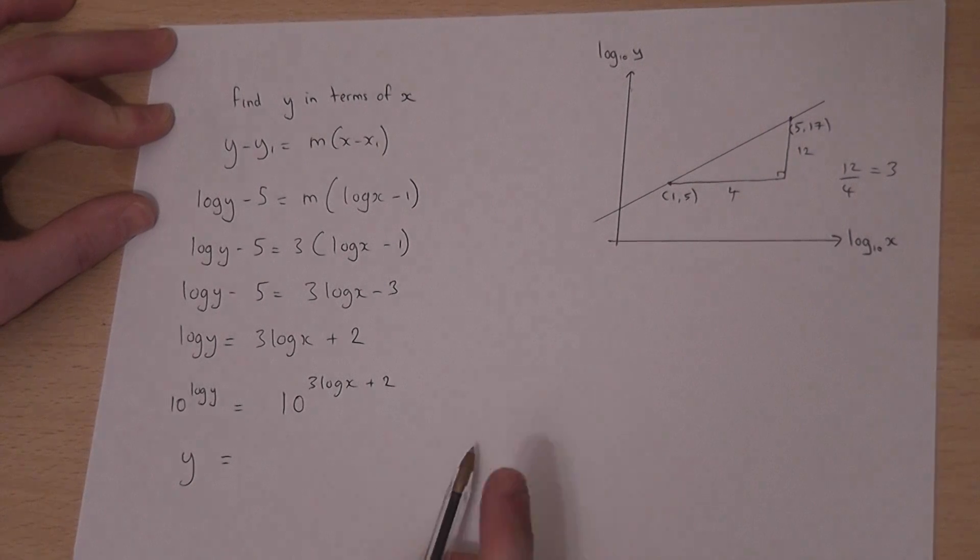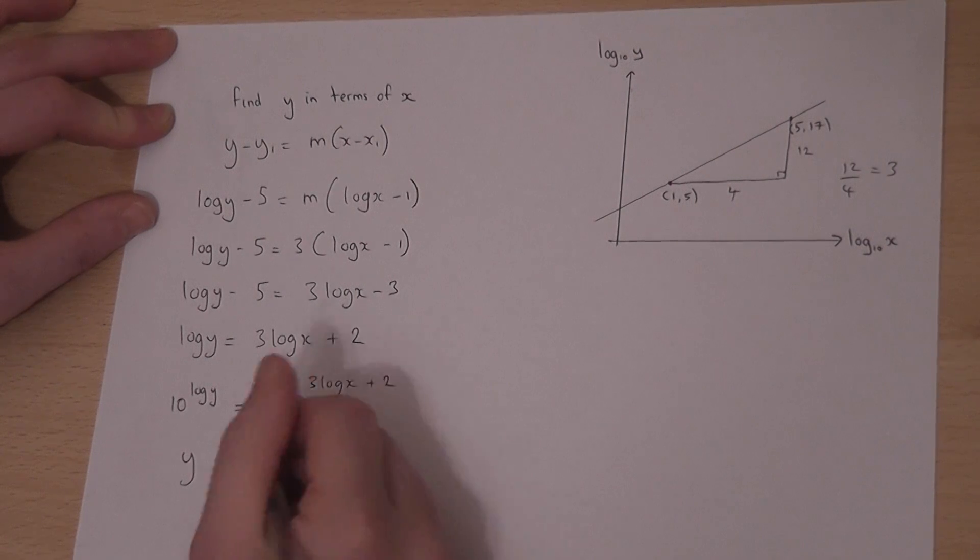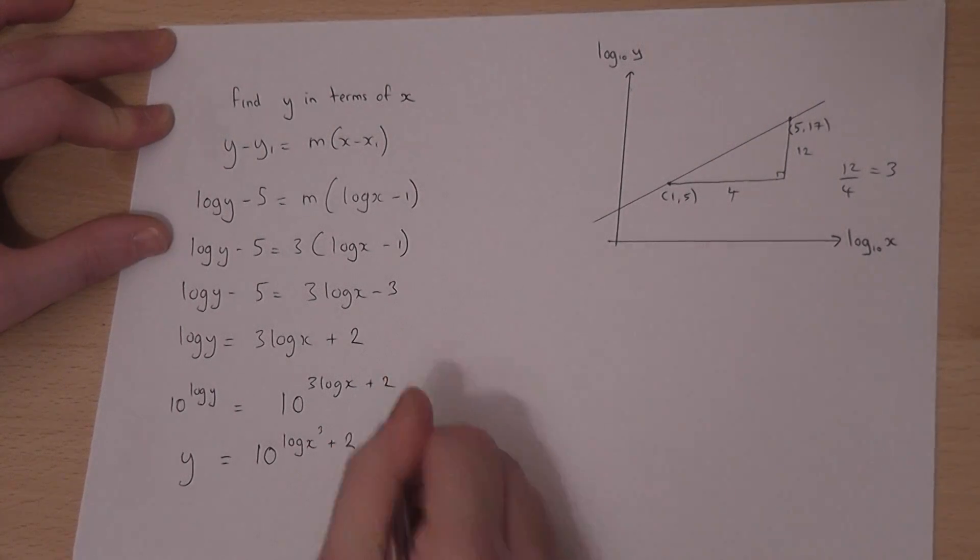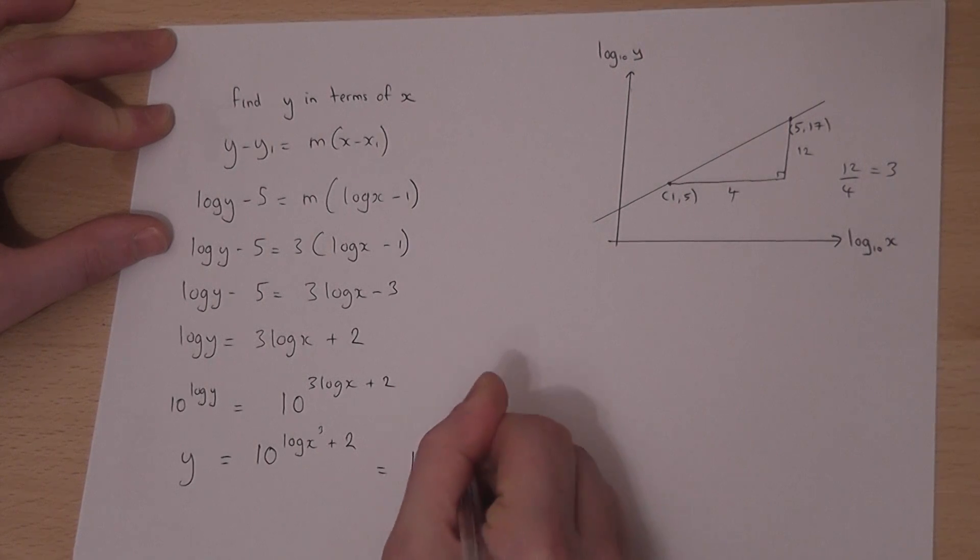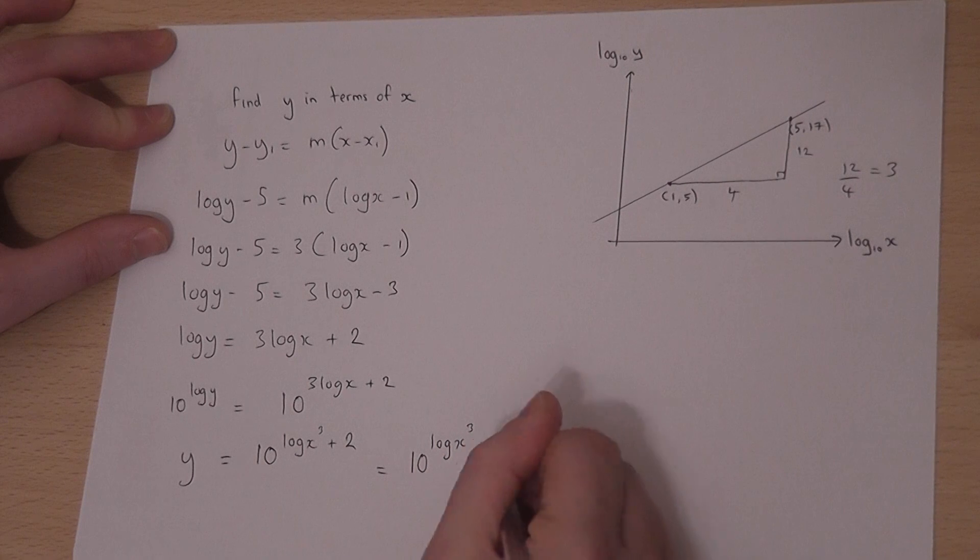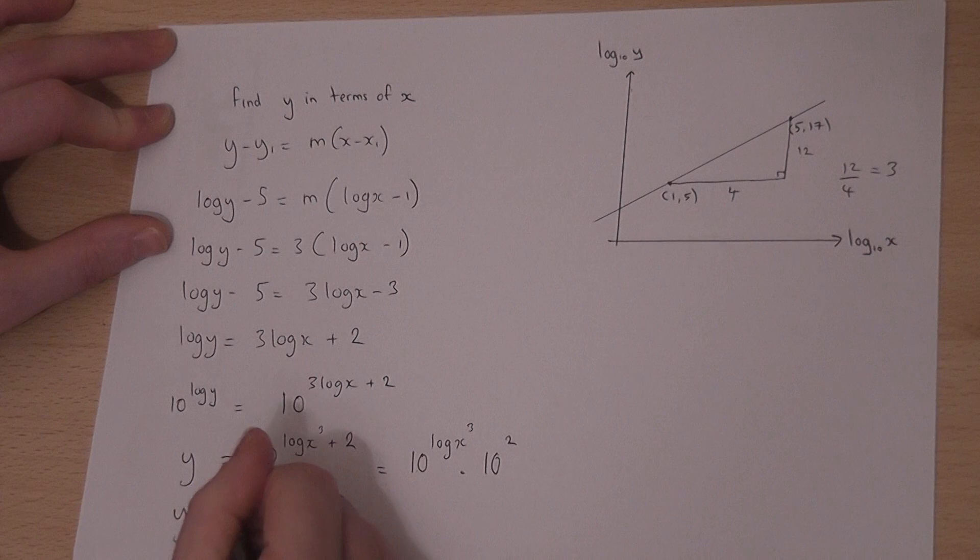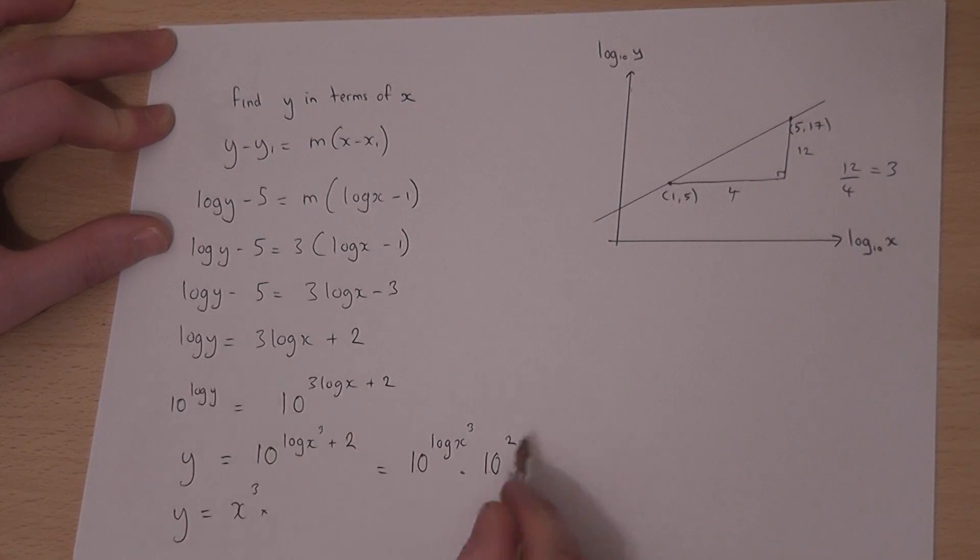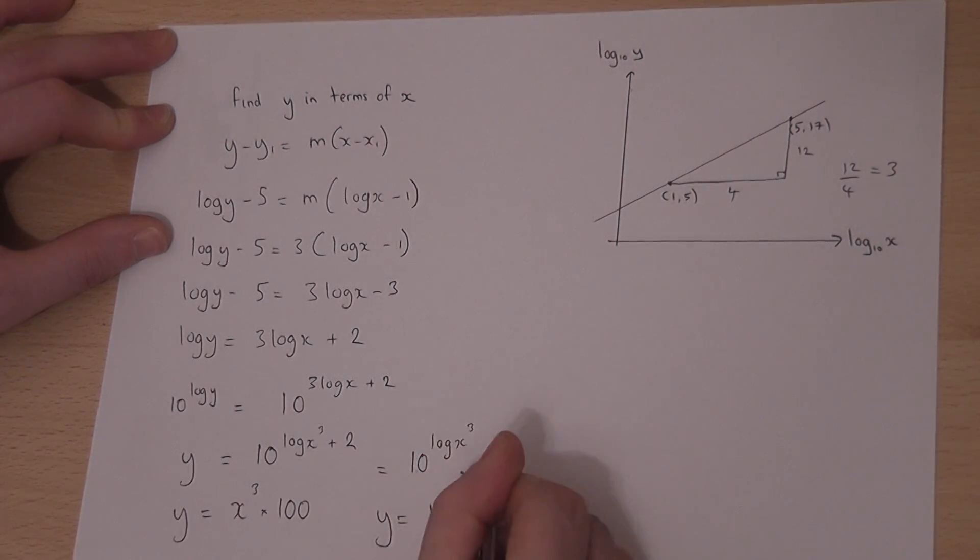I can do a few things here. The 3 next to the log can be raised as a power within the log. So, I get 10 to the power of log x cubed plus 2. I can then split this using power rules to get 10 to the power of log x cubed times by 10 to the power of 2. And 10 and the log cancel off. So, y equals x cubed times by 10 squared, which is 100. Therefore, y equals 100 x cubed.